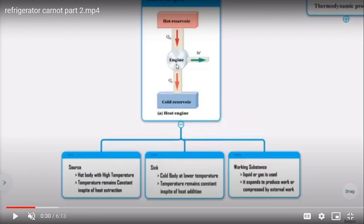The source is a hot body at high temperature, with the temperature remaining constant during heat extraction. The sink is a cold body at lower temperature, with the temperature remaining constant during heat addition.